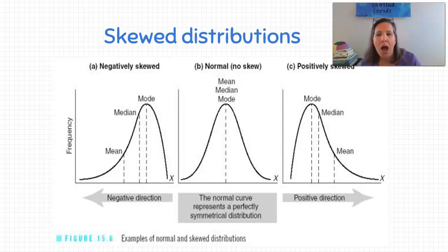So on letter A, on the far left hand side, we have a negatively skewed curve. This is because our mean falls over to the far left. Our mean is over to the far left. And then if you look at the curve on the far right hand side, letter C, that is a positively skewed curve. And again, this is because our mean is to the far right of the data set.